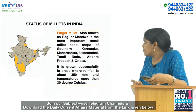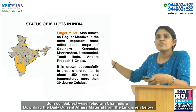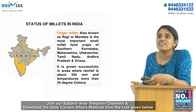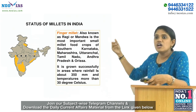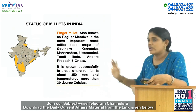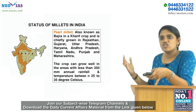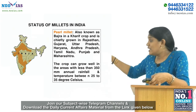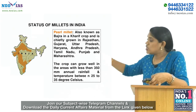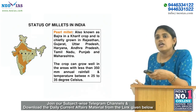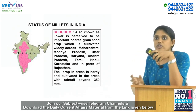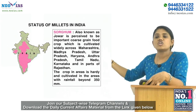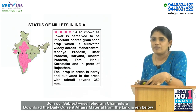Looking at the map of millets in India: major finger millet or ragi producing states are Karnataka, Maharashtra, Uttarakhand, Tamil Nadu, Andhra Pradesh, and Odisha. Major bajra or pearl millet producing states are Rajasthan (leading), Gujarat, Uttar Pradesh, Haryana, and Andhra Pradesh. For sorghum or jowar, major producing states are Maharashtra, Madhya Pradesh, Uttar Pradesh, Haryana, Andhra Pradesh, and Tamil Nadu.